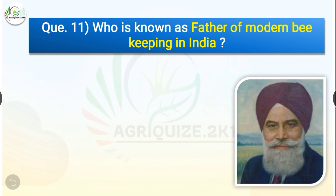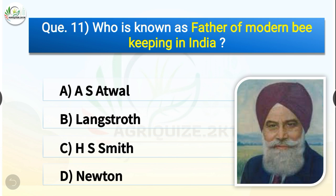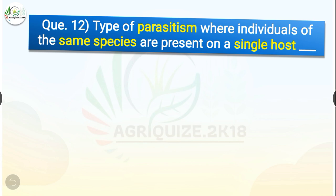Question number eleven: Who is known as father of modern beekeeping in India? The options are A.S. Atwal, Langstroth, H.S. Smith, or Newton. The correct answer is option A — A.S. Atwal. A.S. Atwal is known as father of modern beekeeping in India; he introduced Apis mellifera in India, whereas Langstroth is father of modern beekeeping in the world.